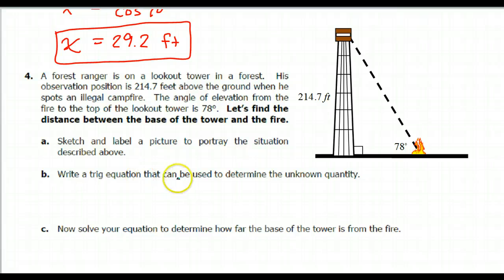Write a trig equation that can be used to determine the unknown quantity, the distance between the base of the tower and the fire. This is the distance that we're supposed to find, from the base of the tower to the fire. We've got the opposite from the angle. This height is opposite and the unknown is adjacent. Opposite over adjacent is the tangent function. So we will set up and say tangent of 78 degrees should equal opposite over adjacent, 214.7 over x.